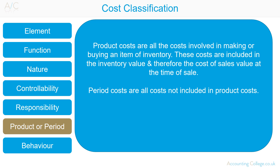This classification becomes important when you study marginal and absorption costing. Product costs are all the costs involved in making or buying an item of inventory; these are included in the inventory value and therefore the cost of sales at the time of sale. Period costs are all costs not included in product costs — since these are not involved in the production process, they are included in the income statement for the period in which they relate. The distinction between product and period costs is necessary for calculating inventory values and profit figures.